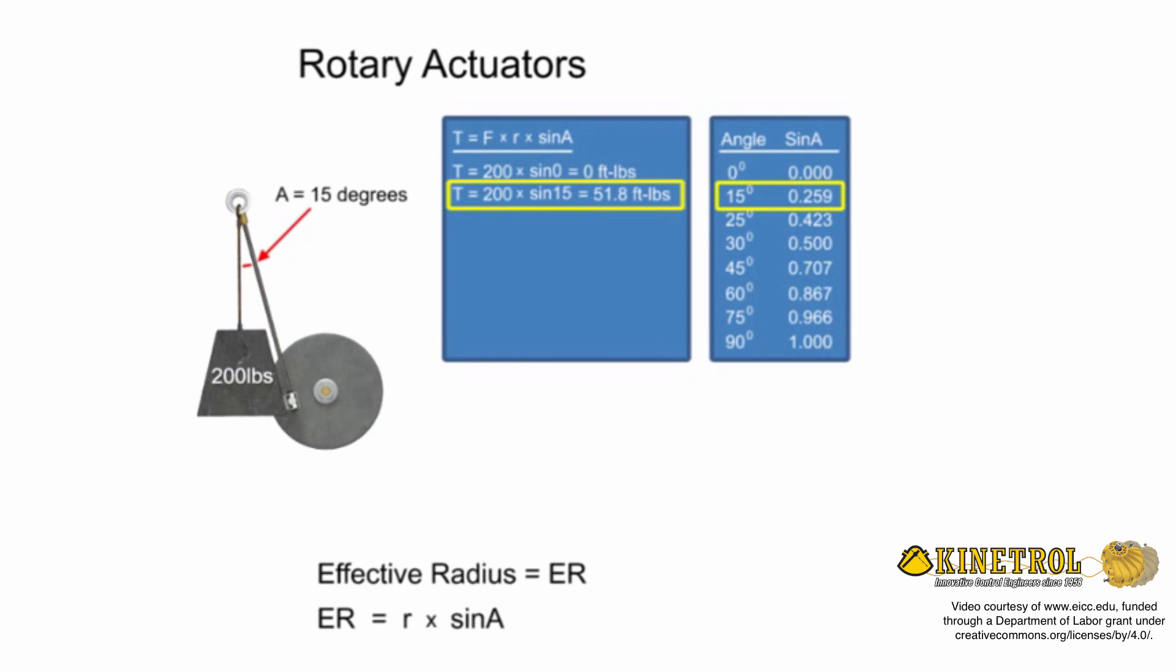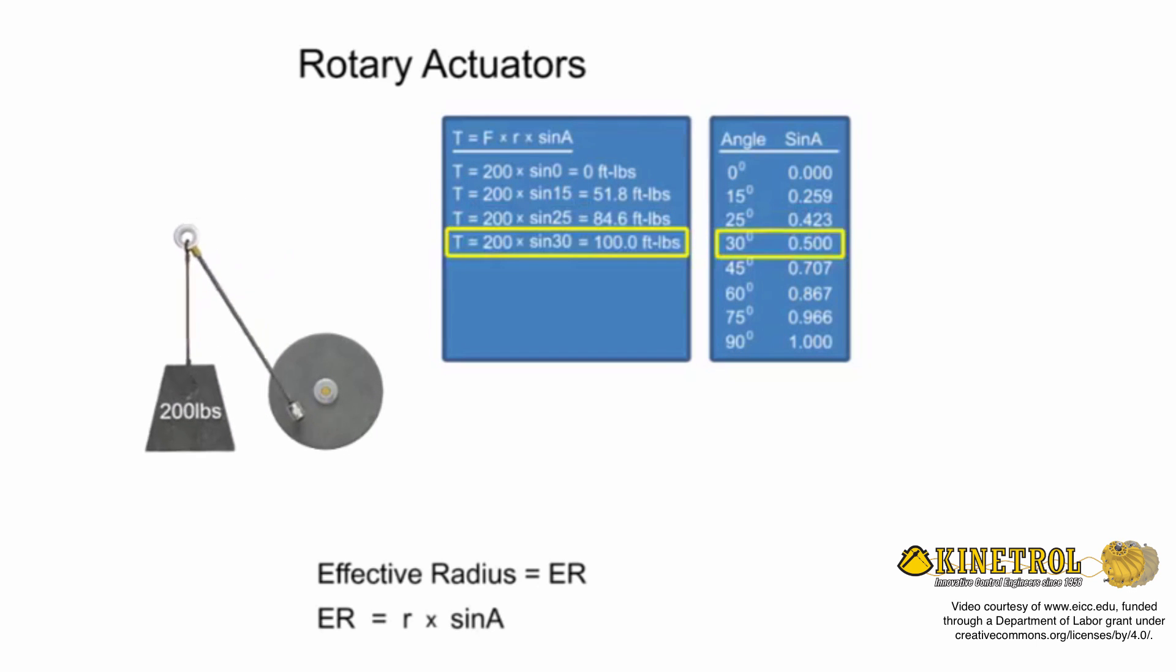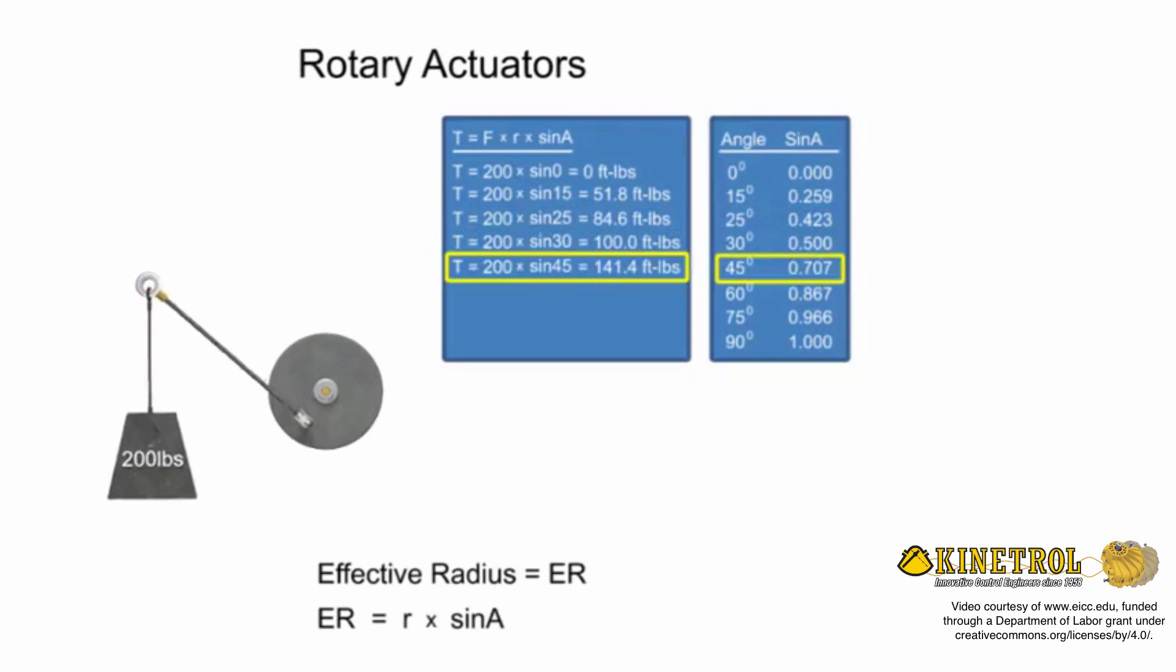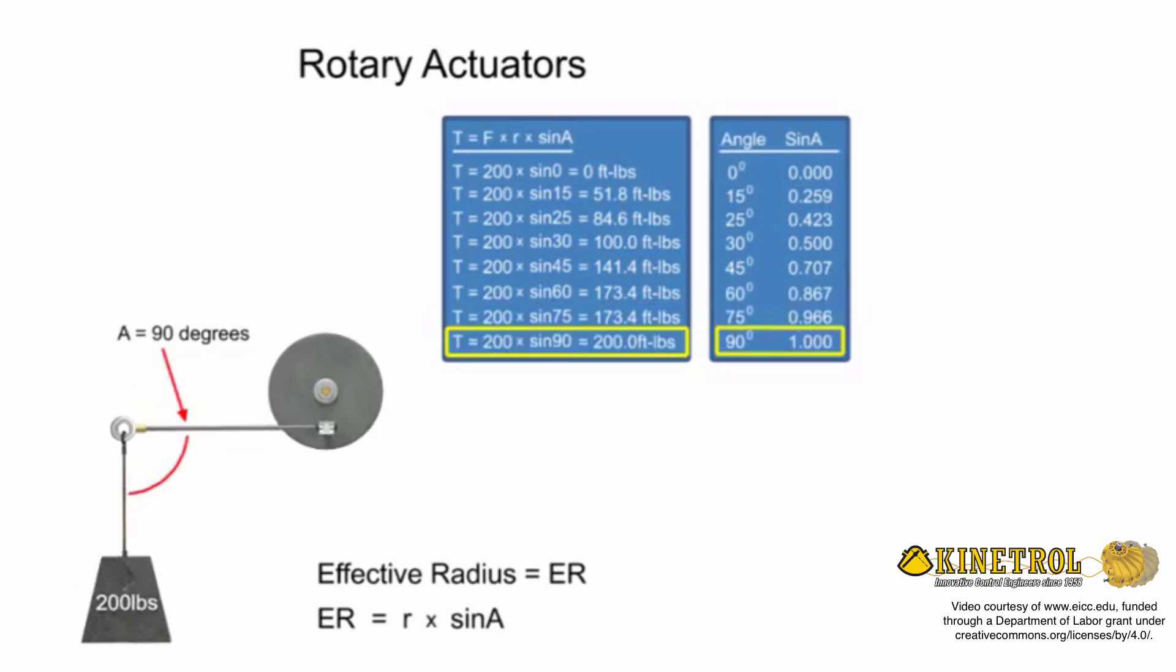As the angle increases, the sine also increases, which will increase the torque. When the lever arm is at right angles to the force of the weight, the angle is equal to 90 degrees.